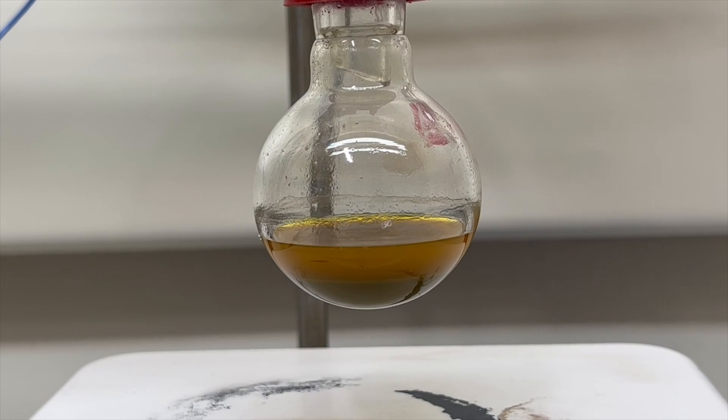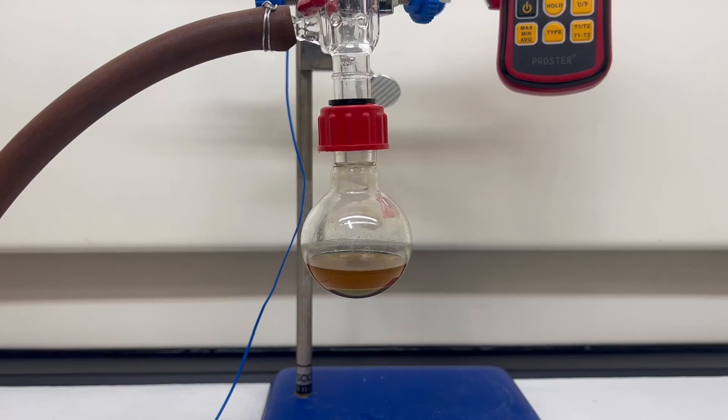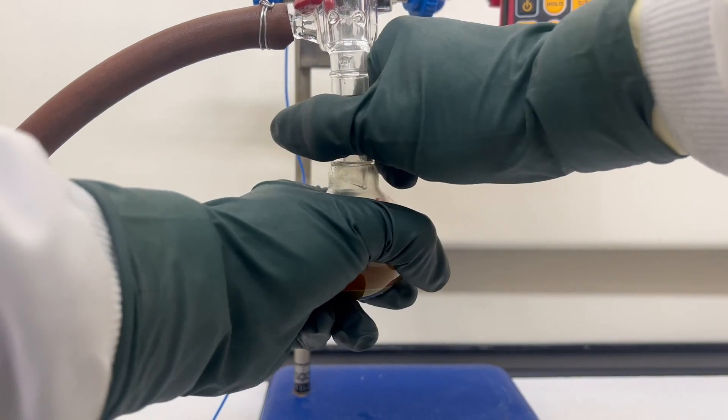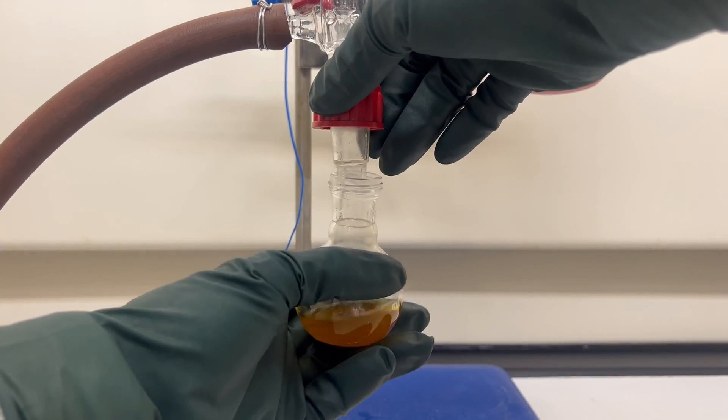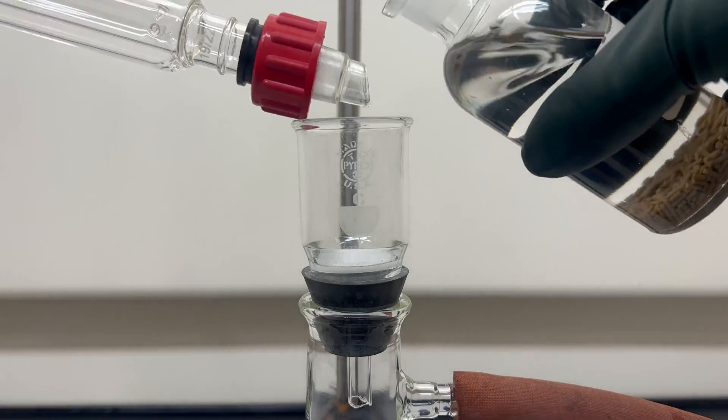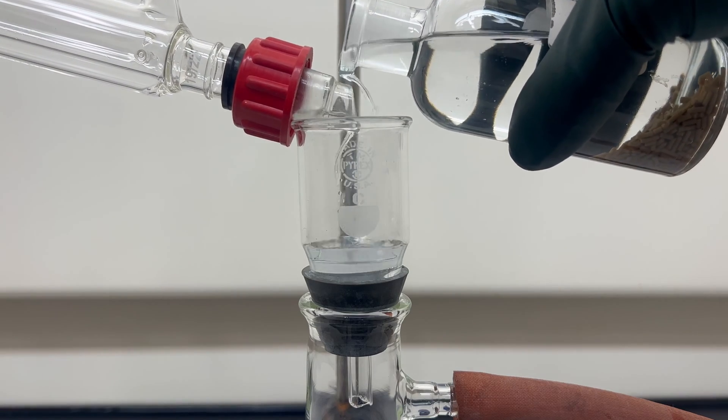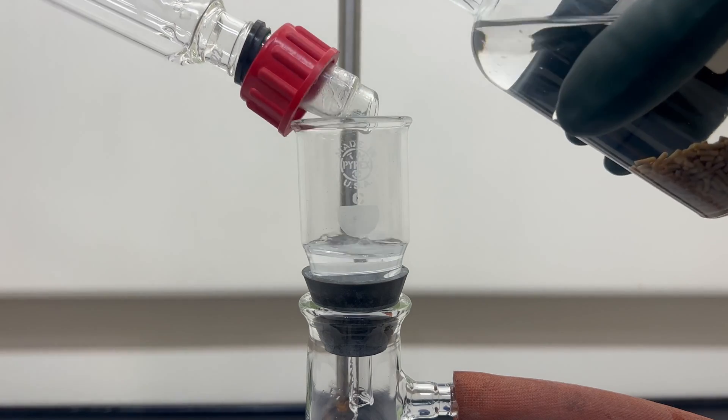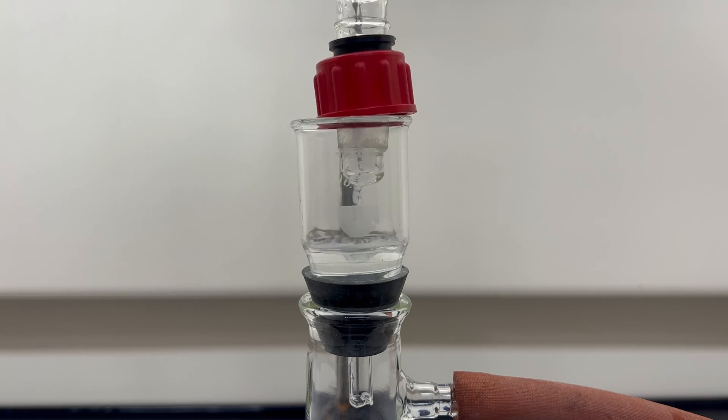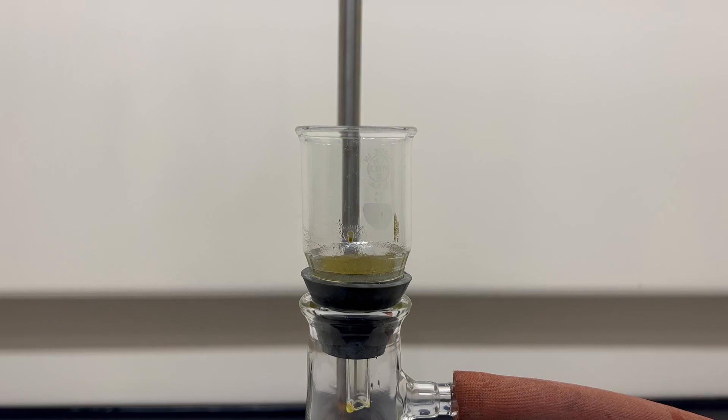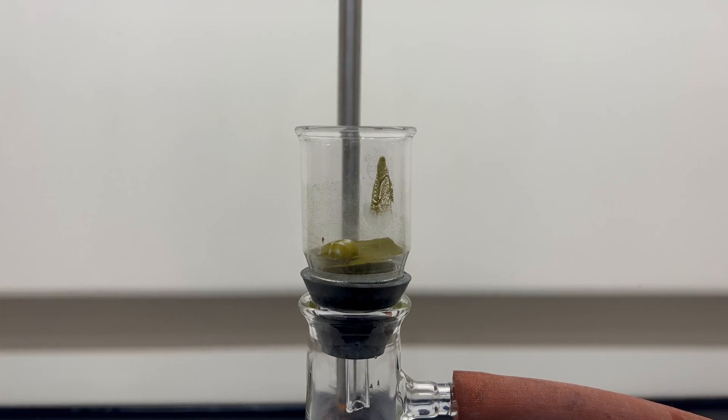After the reaction completes it's allowed to cool to room temperature. The reflux condenser is removed and rinsed into a fritted filter. Then the material in the reaction flask is transferred to a fritted filter. It took a few washes to transfer the material completely.